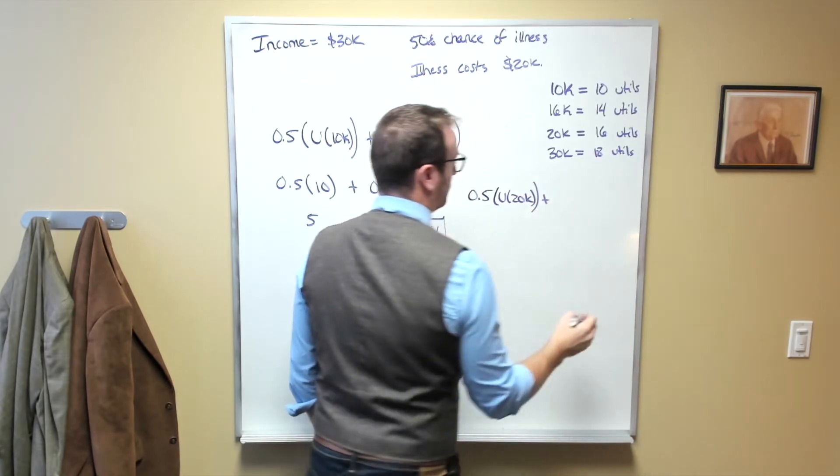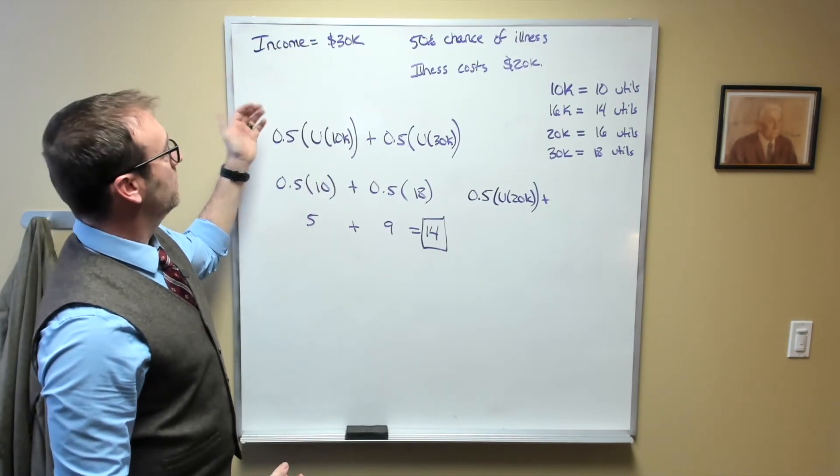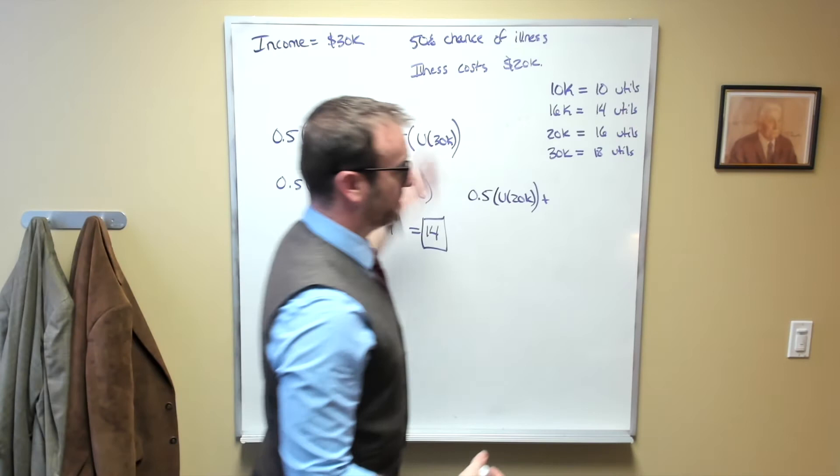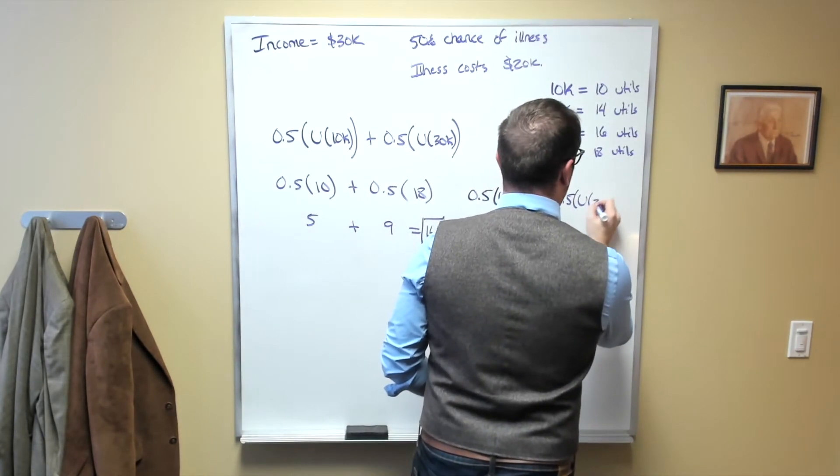And if they're not sick, they have to pay $10,000 for their insurance bill. So that'd be $30,000 minus the 10. So that would be 0.5 times the utility of $20,000.